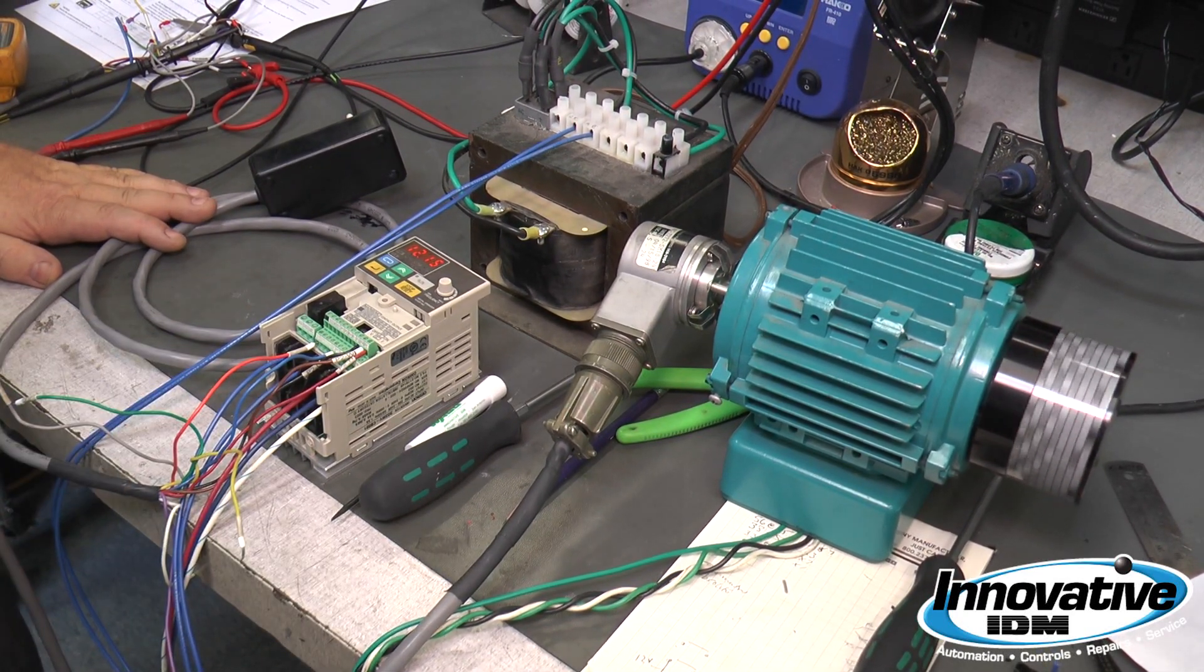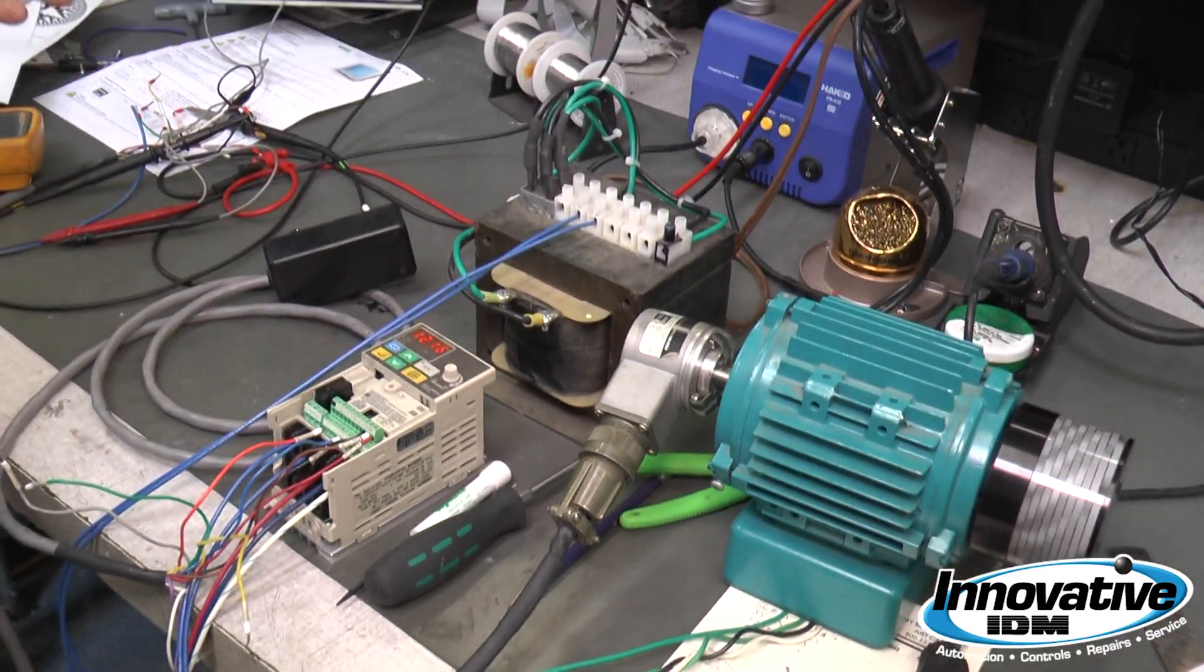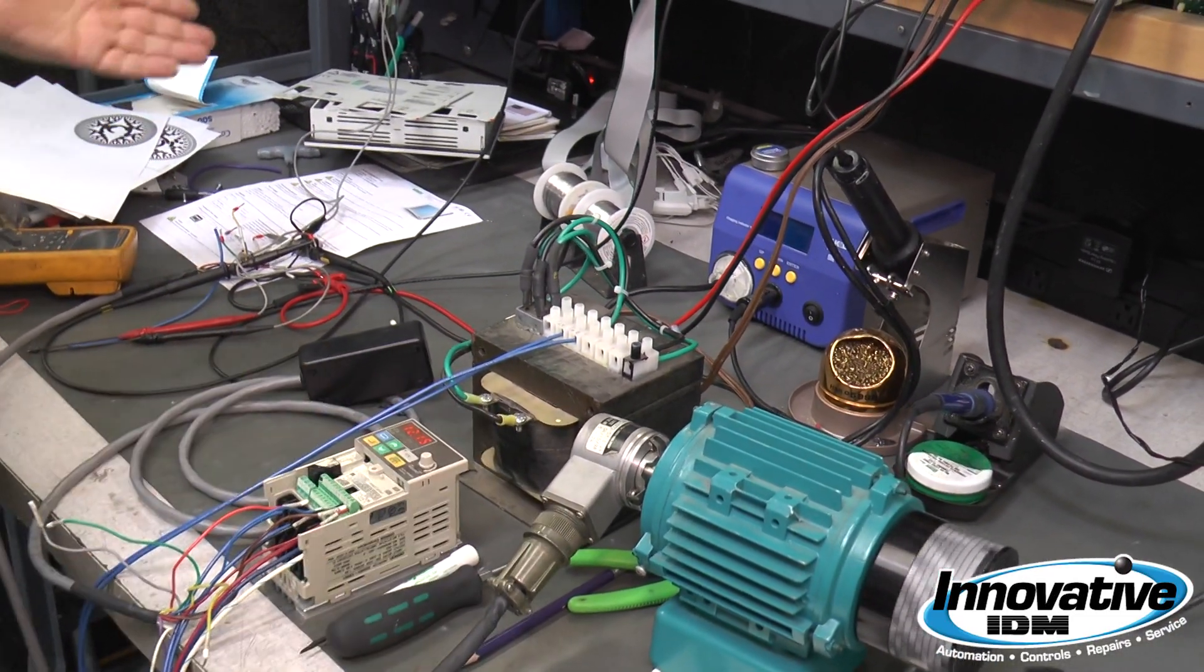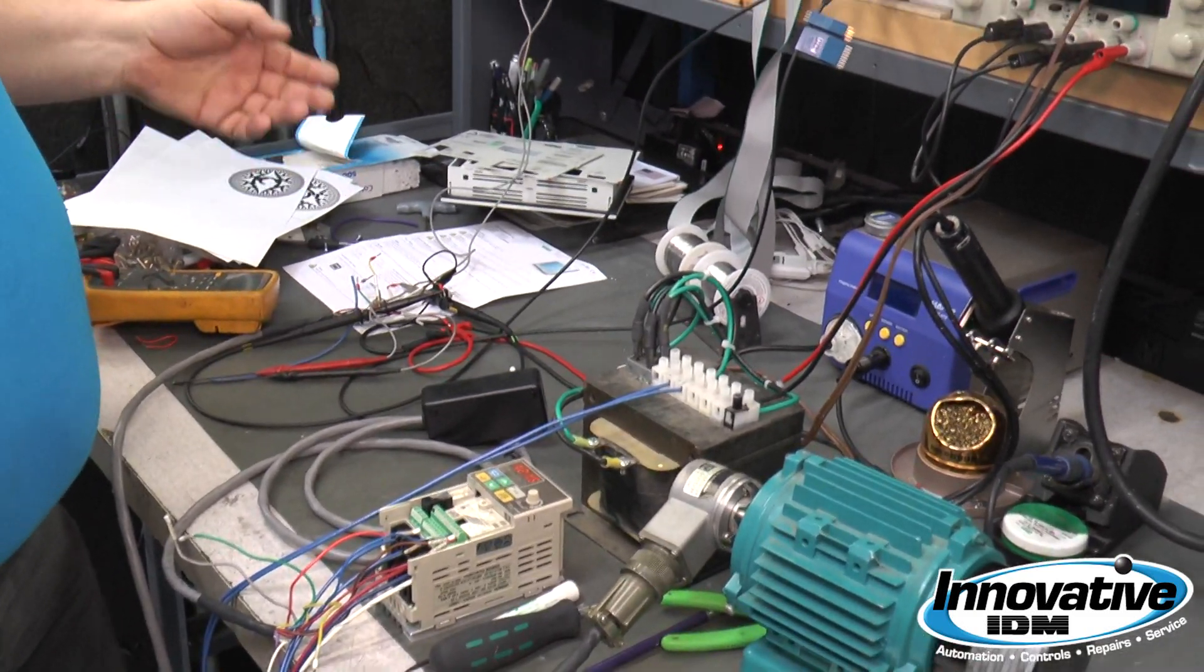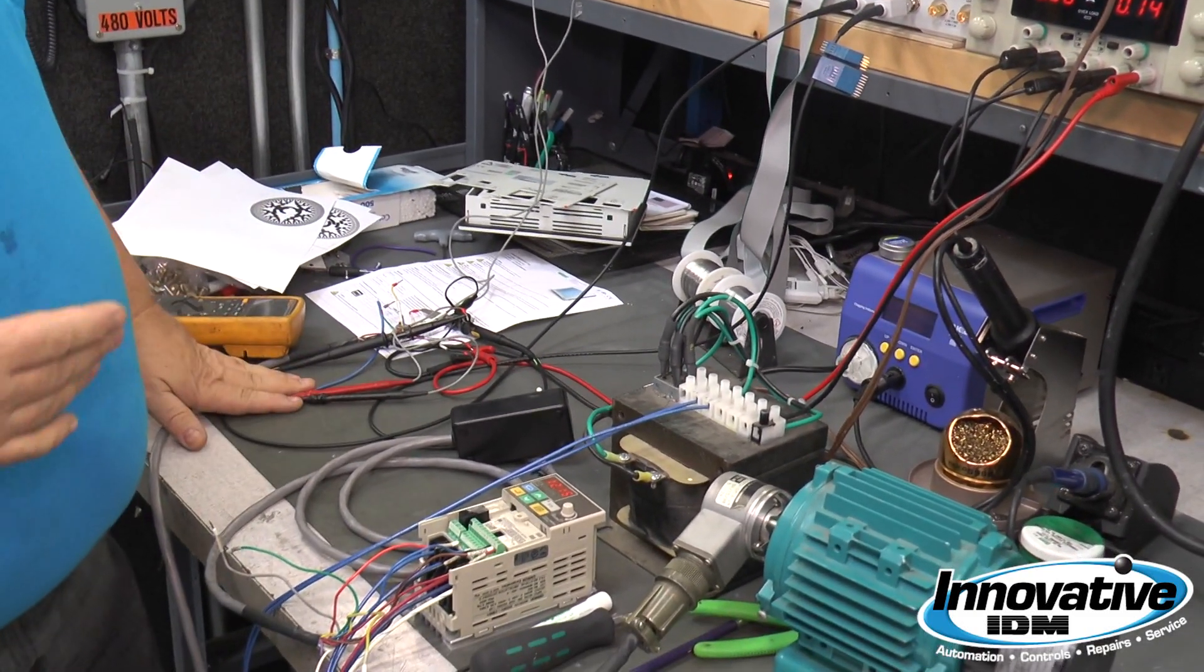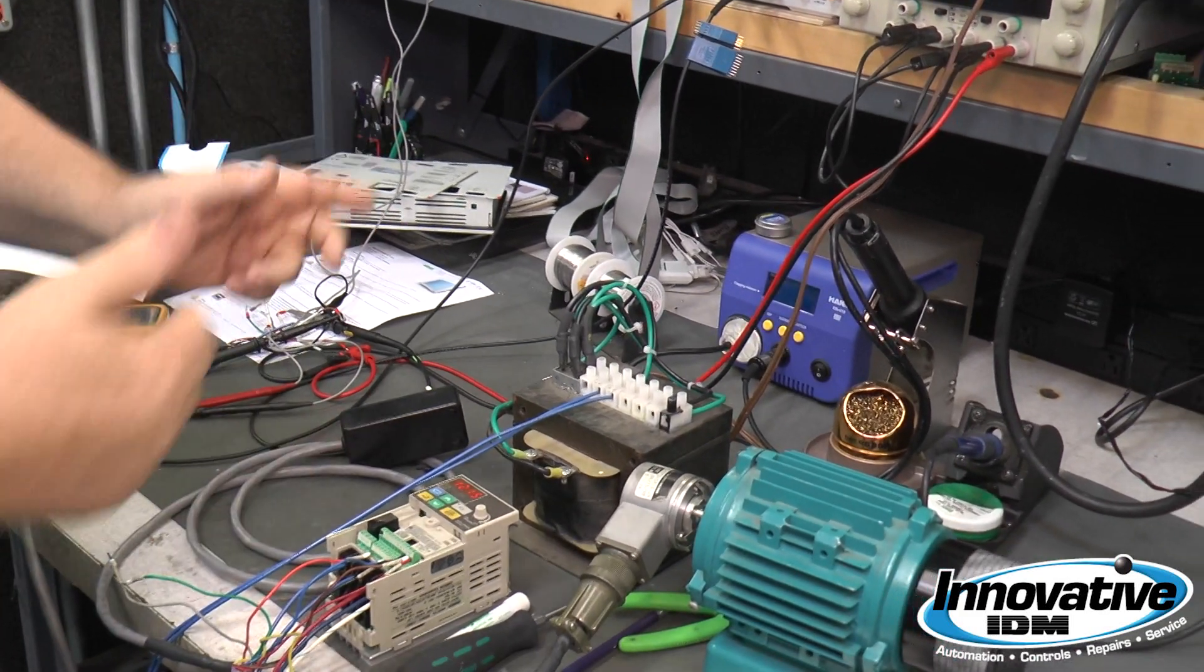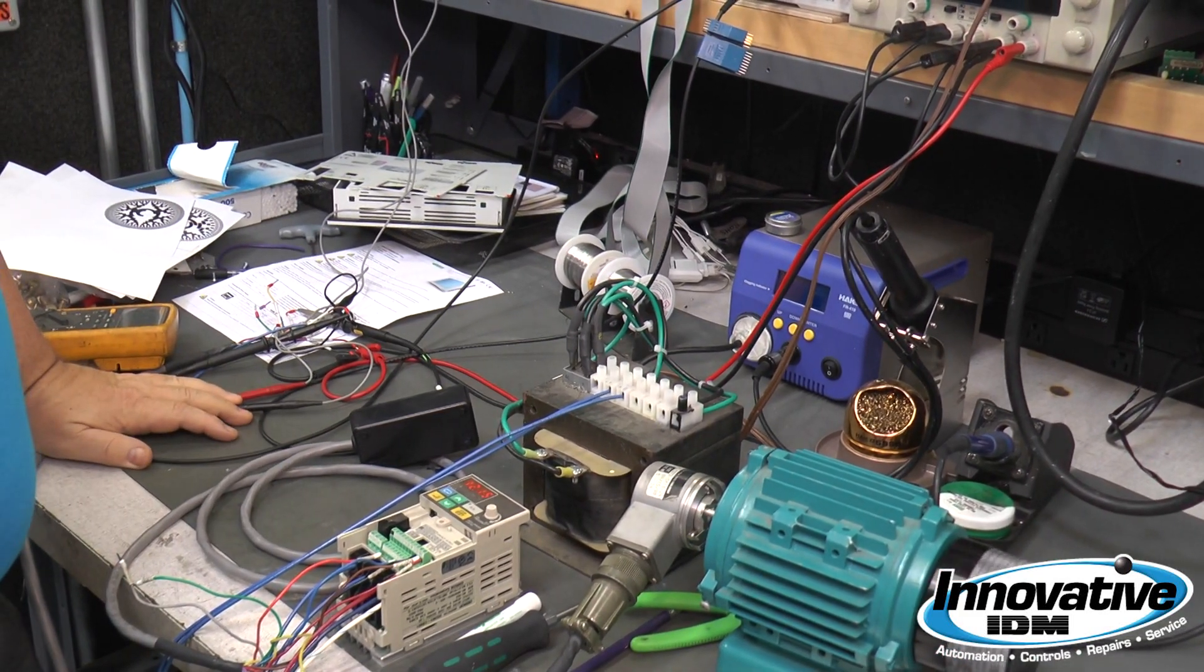Two years down the road you got a dead battery, power fails, you bring your system back up and all of a sudden it's not working. It says your encoder doesn't know where it's at, so you automatically have to home the entire system back out. It's the same thing as if you had pulled this encoder off, turned it around, stuck it back on there. The drive doesn't know where home position is.